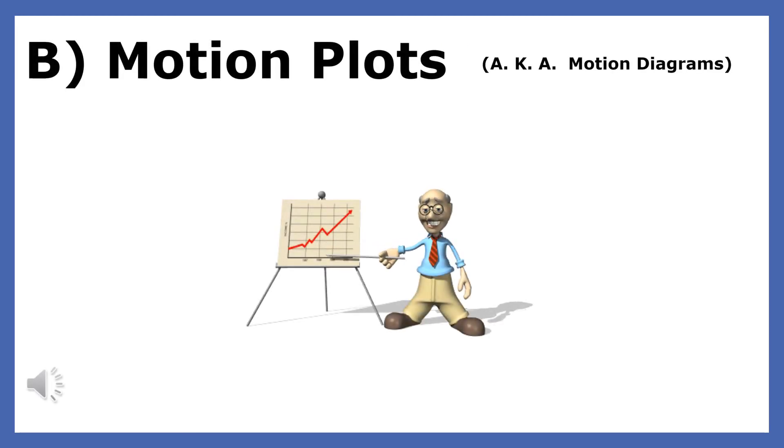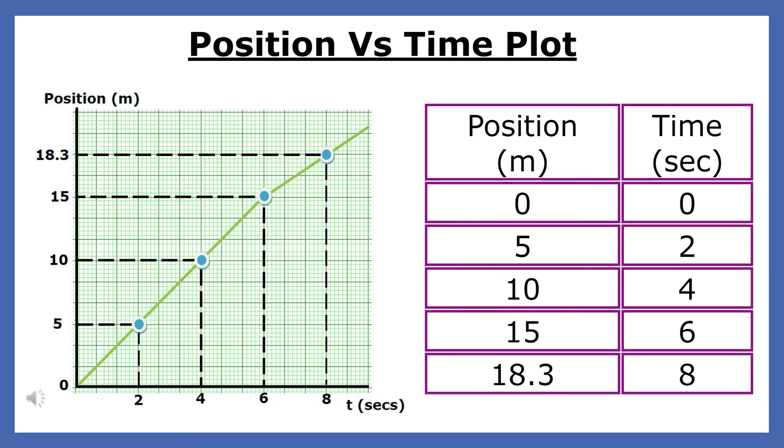When physicists study the motion of an object, they either measure its distance or velocity as a function of time. They turn this data into a plot in order to get a moment-to-moment description of the object's motion. Here is a plot of position versus time for an object. Notice that the independent variable time is on the x-axis. Plotting motion data is so powerful because it gives us a detailed visual description of the motion of the object.